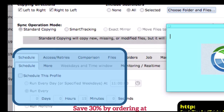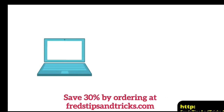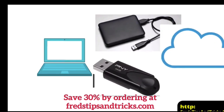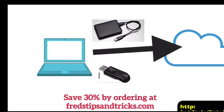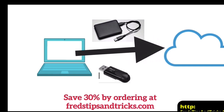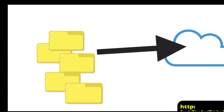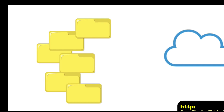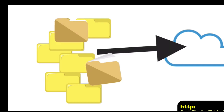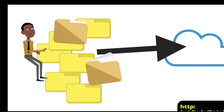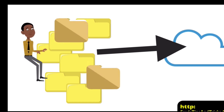Syncovery can backup and sync from practically anywhere to anywhere — such as your hard drive to an external hard drive, a thumb drive, or to the cloud, which includes Google Drive, Amazon, Dropbox, a Digital Ocean droplet, or other virtual private server. You can start simple and go to extremely detailed control by fine-tuning your profiles, and even run Pascal scripts for extremely unique cases.